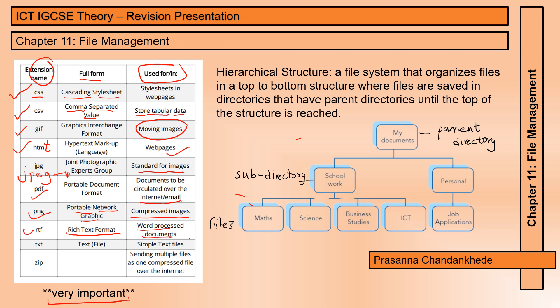RTF stands for Rich Text Format — a word processing document format that stores text. TXT is a text file that stores simple text with no formatting — that's the plain one, not RTF. ZIP doesn't have a full form — it's used for sending multiple files as one compressed file over the internet.